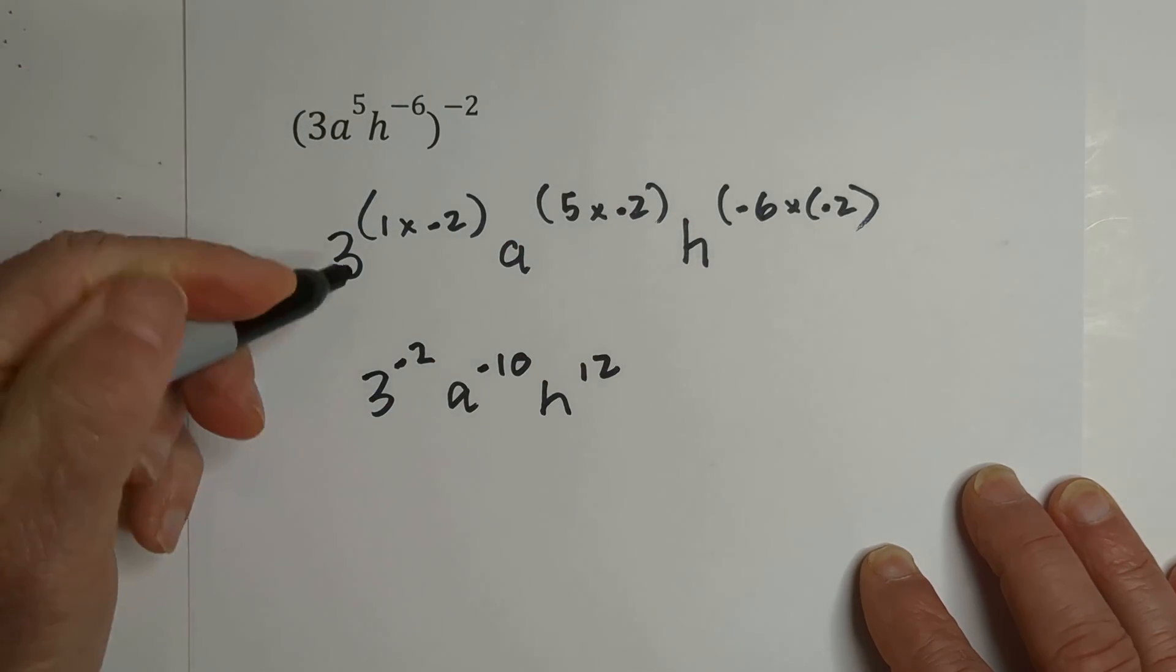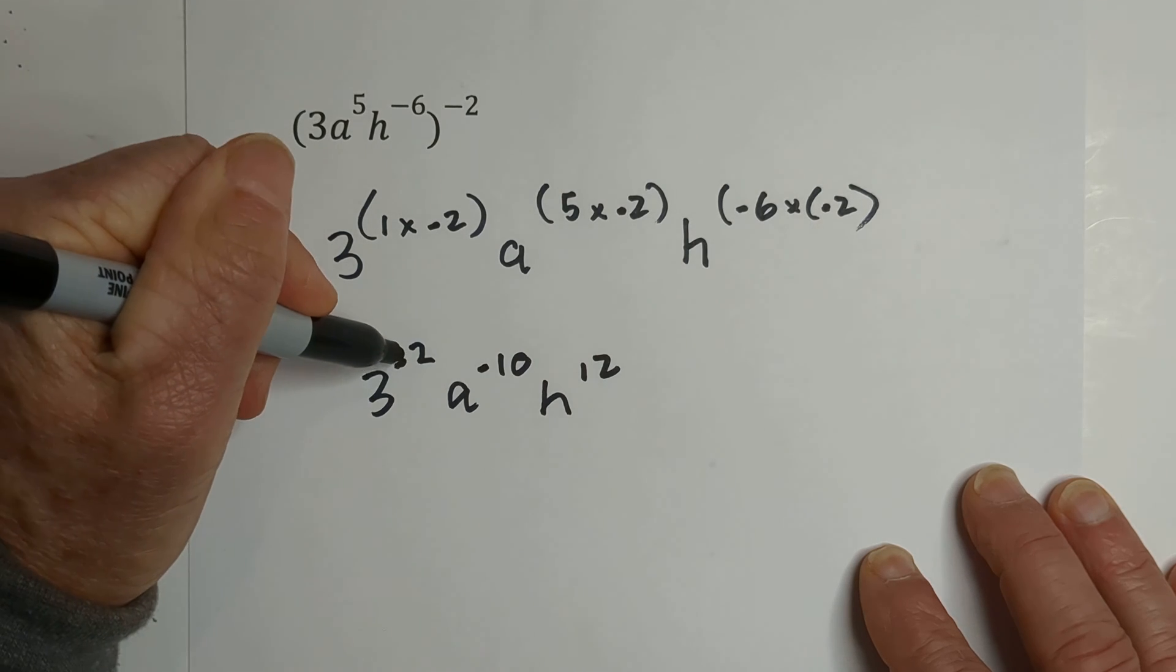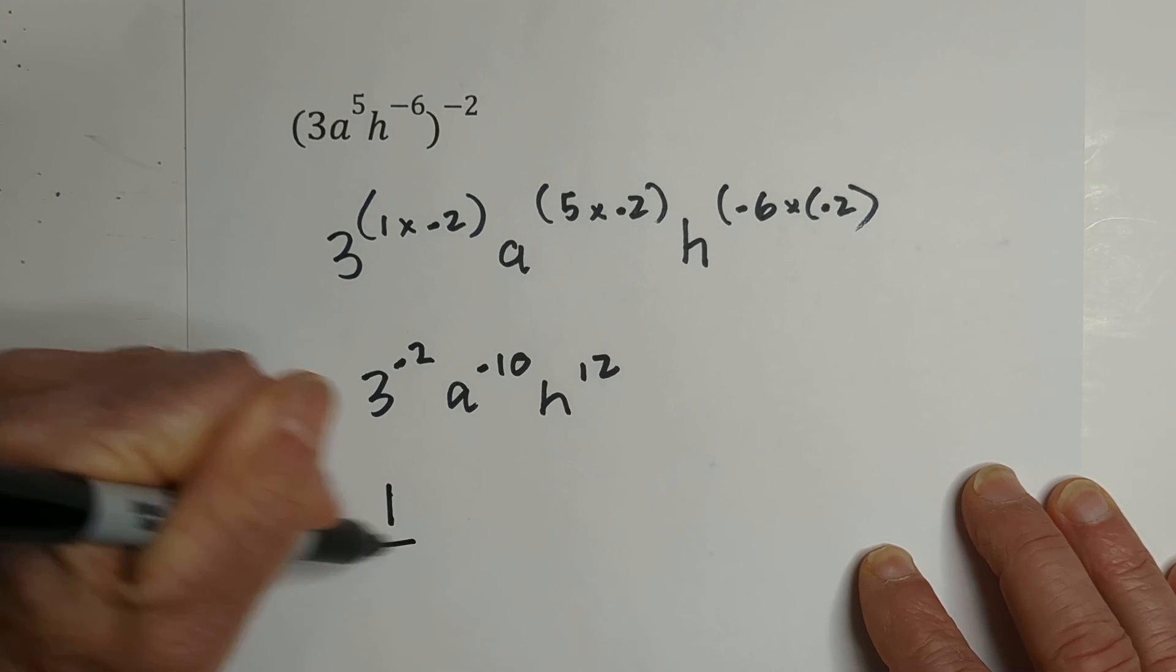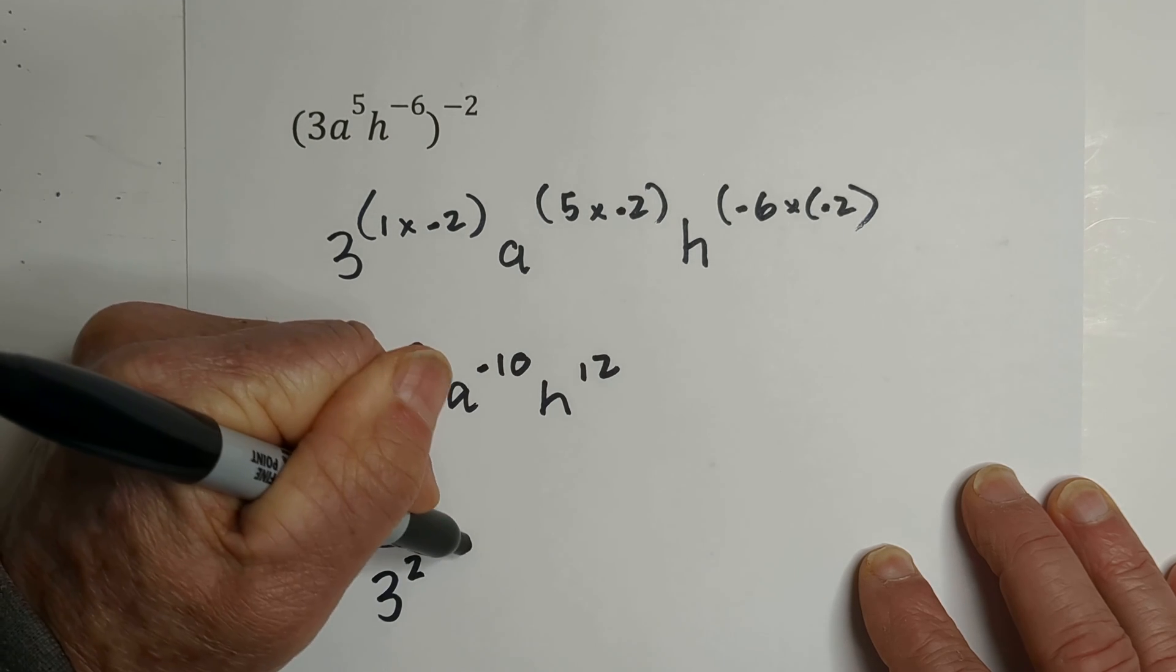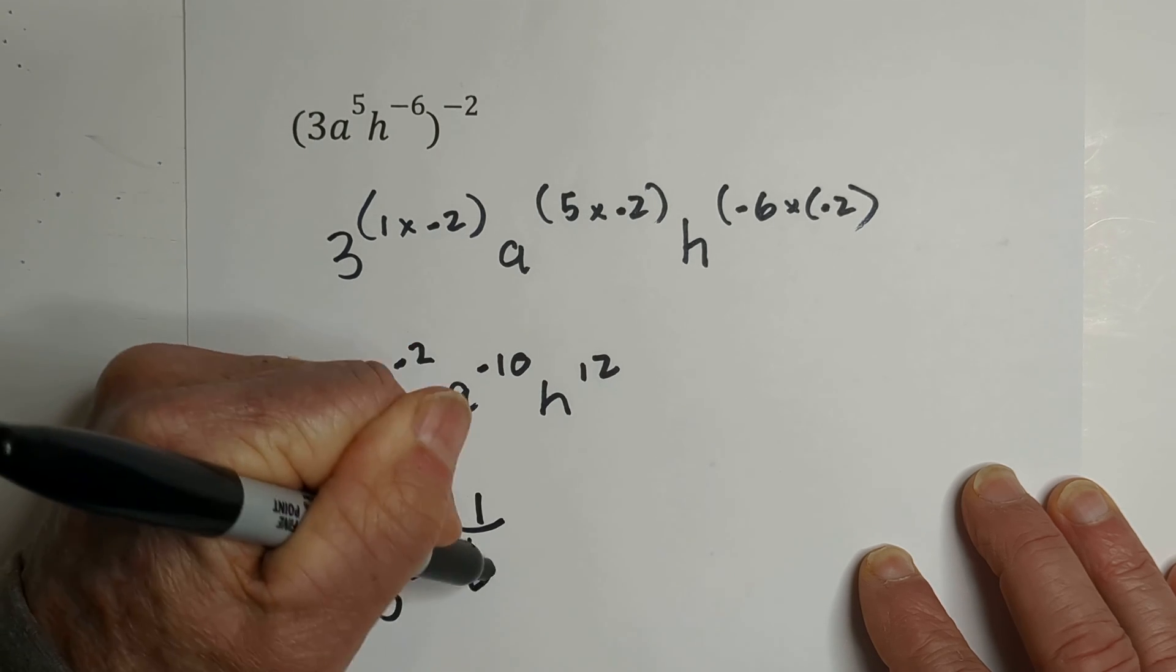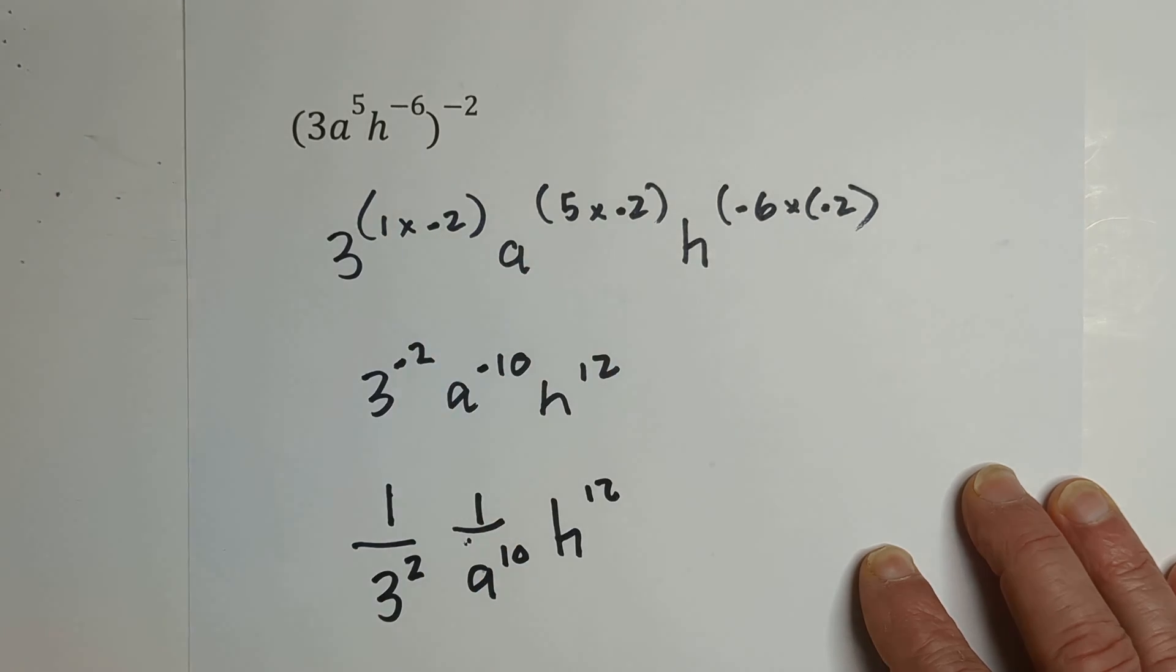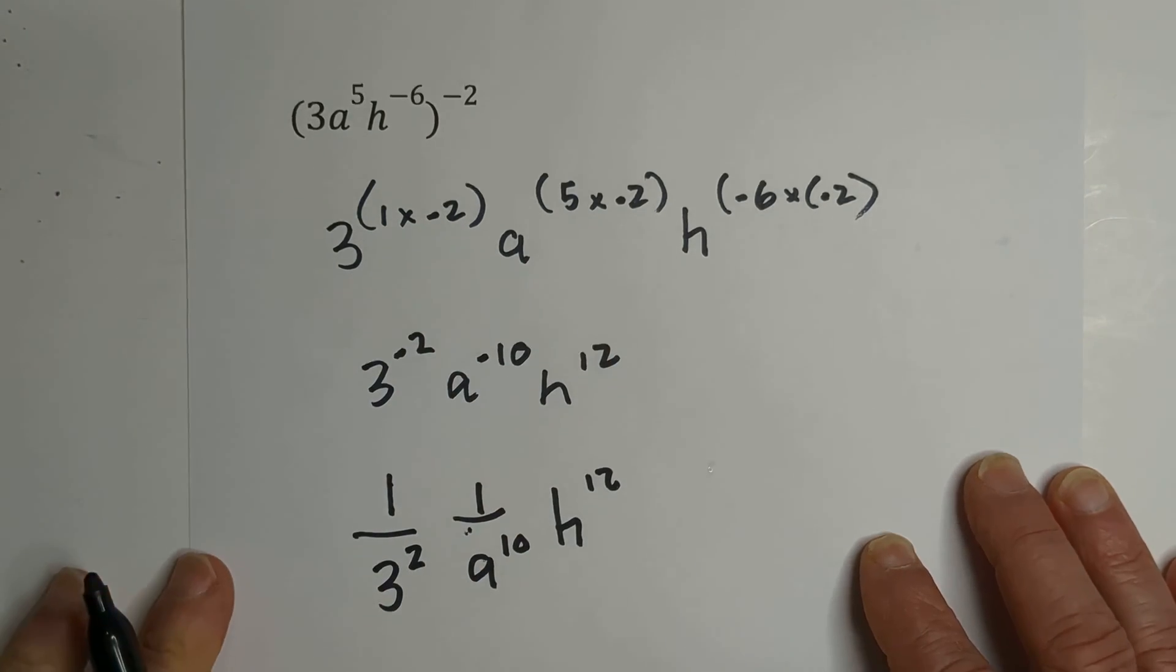Now we need to write it so we do not have any negative exponents. To do that, we place it over 1, and then that's 1 over A to the 10th, and H will be on top. One more thing,